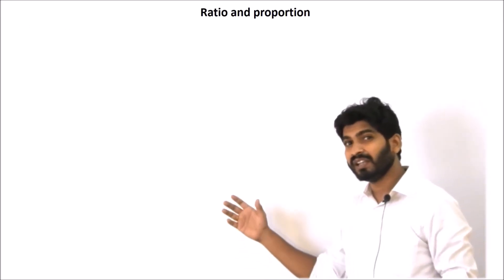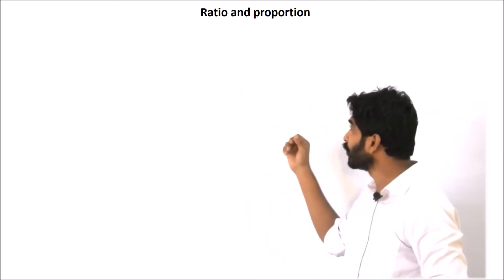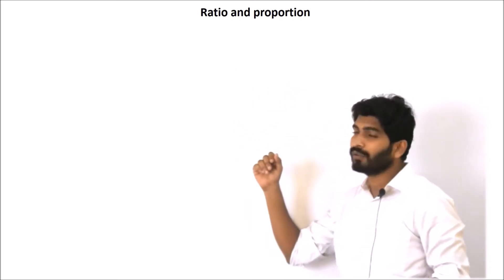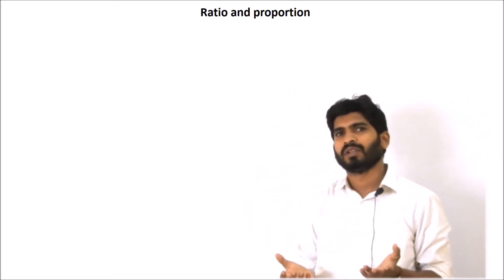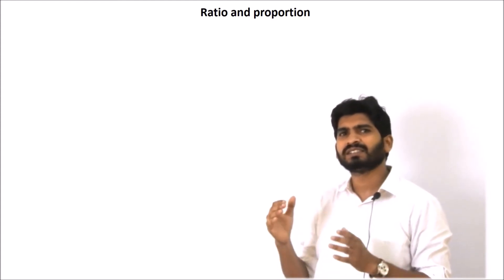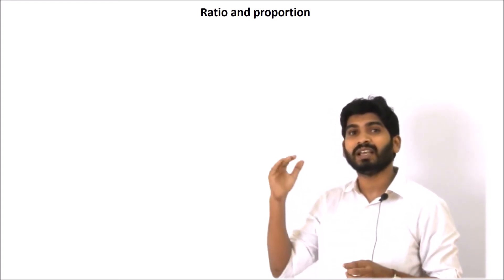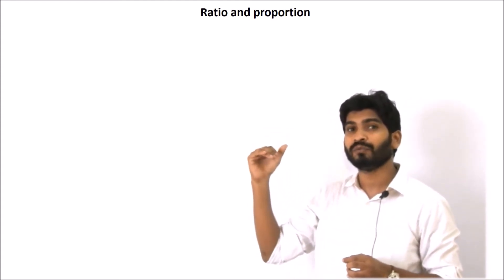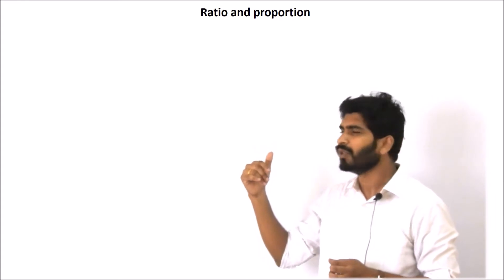Let us quickly revise our lesson on Ratio and Proportion. The ratio of two numbers is the expression of the numbers in P/Q form or P is to Q form.